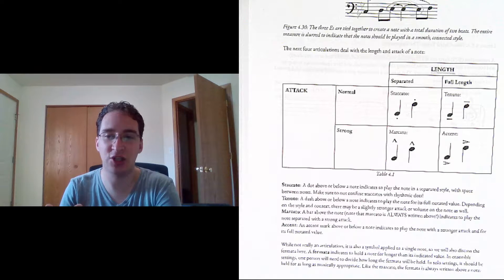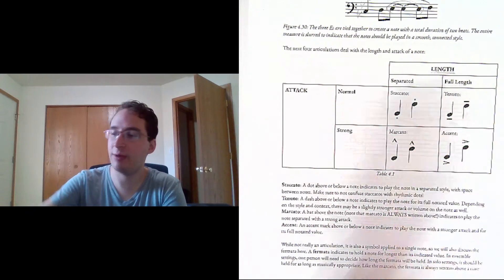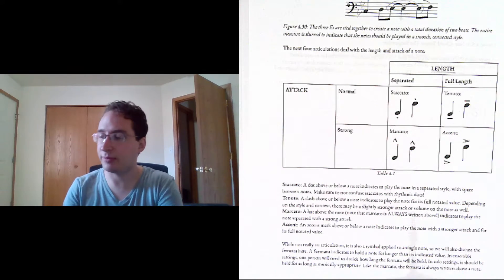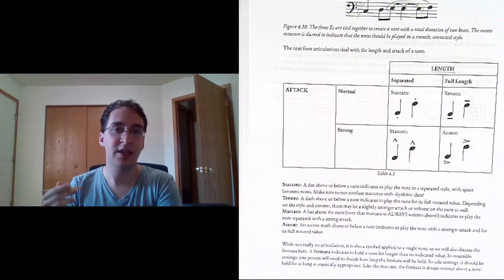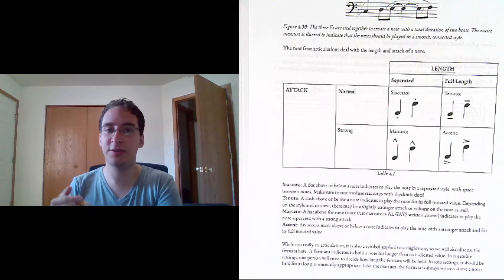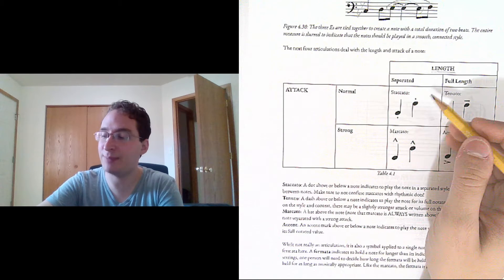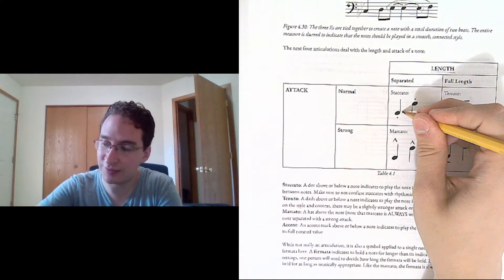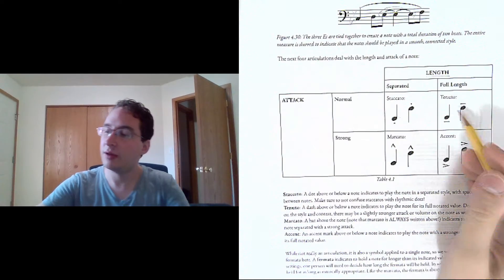But in general, if we have staccato then we have a dot above or below the note. The style of the music will determine exactly how much separation there is, but there will be some space and daylight between the notes. Notice that these go directly above or below the notes. If it's off to the side, that's going to be a rhythmic dot. That's something entirely different.